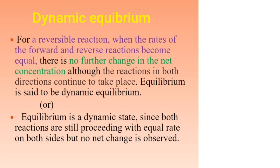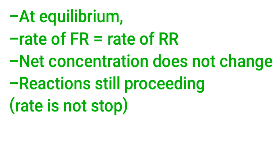This is called dynamic equilibrium. Equilibrium is a dynamic state since both reactions are still proceeding with equal rates on both sides, but no net change is observed. At equilibrium, the rate of the forward reaction equals the rate of the reverse reaction, and the net concentration does not change.